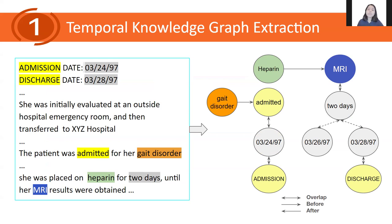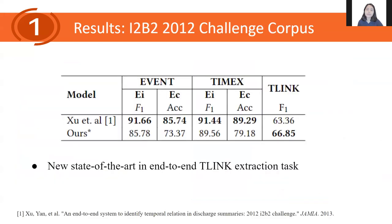We want our model to not only extract explicit temporal relations indicated by language cues, but also associations deducible through temporal transitivity or invertibility. We use a span-based joint extraction framework and obtain a new state-of-the-art on the end-to-end temporal relation extraction task of the I2B2 2012 Temporal Relations Challenge corpus, and we hope to further improve this.